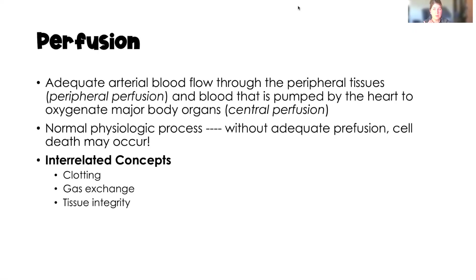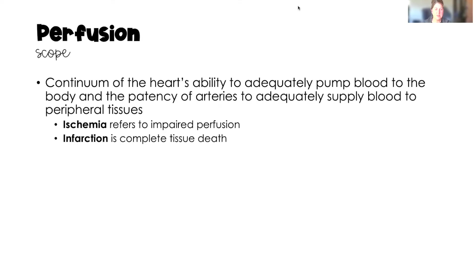When we think about interrelated concepts, clotting, gas exchange, and tissue integrity are all very vital to perfusion. The scope of perfusion is a continuum of the heart's ability to adequately pump blood to the body and the patency of arteries to adequately supply blood to our peripheral tissues. When perfusion is altered, we get ischemia, which is the consequence of impaired perfusion, and because of ischemia we can get tissue death, also called infarction.